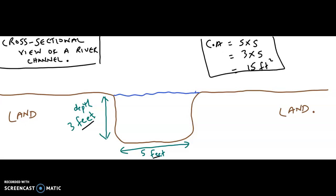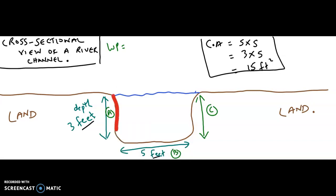Now, if you were to calculate the wetted perimeter — the wetted perimeter is the sum of all the sides, just like when I calculate the perimeter in maths. The wetted perimeter would be equal to side A plus side B plus side C. We consider it the wetted perimeter because this area would be in direct contact with the water, and the same applies to the width and both sides.